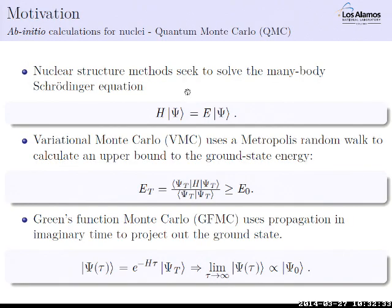So what do nuclear structure methods seek to do? We're trying to solve a many-body Schrödinger equation. This is the one-page propaganda slide for Monte Carlo. VMC can give you an upper bound to the ground state energy. Green's Function Monte Carlo is a lot like diffusion Monte Carlo in the sense that you're using propagation in imaginary time to project out the ground state. In principle, you could start with any trial wave function and project out the ground state, but in practice you actually have to have a decent trial wave function.